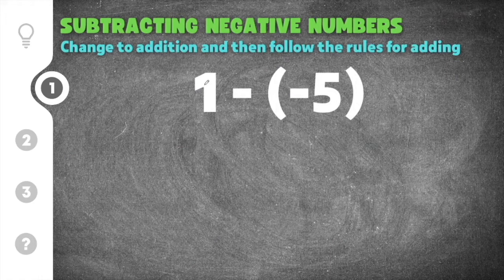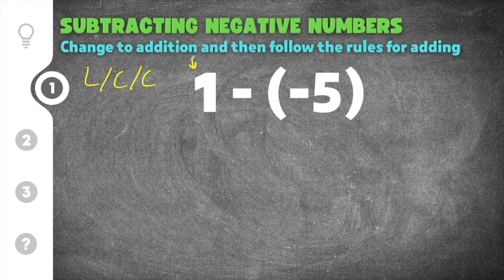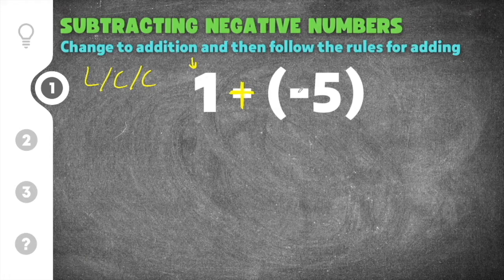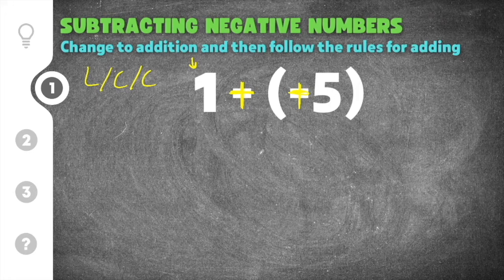This problem gives us one minus negative five. We know the rule is to leave change change. So I'm going to leave the sign on the one the same, change the middle into a plus, and change the negative five into a positive five. So we left one the same, changed the minus to a plus, and changed the negative five into a positive five.